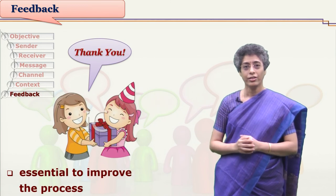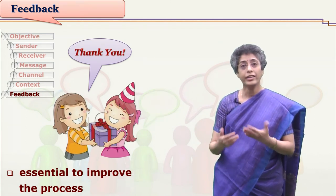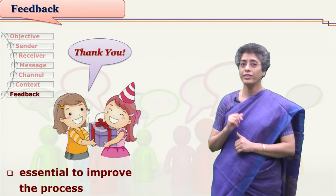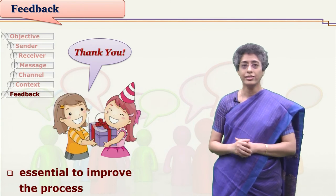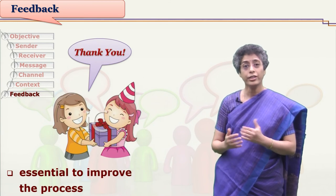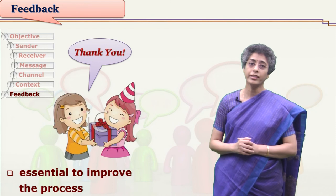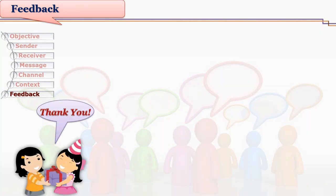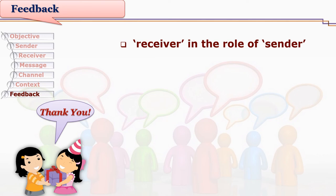Even constructive or corrective feedback helps correct the communication process. While giving feedback, the receiver is always in the role of a sender. Whenever the sender sends a message to the receiver, the receiver's reaction and response to it is feedback. While giving this feedback, the receiver selects a message — feedback itself becomes a message and the receiver imparts it. The receiver chooses some channel and mood and passes on the feedback to the sender.